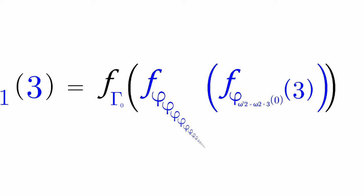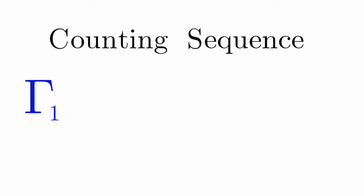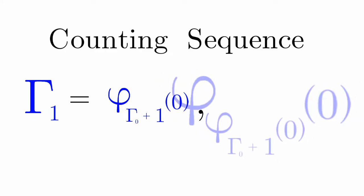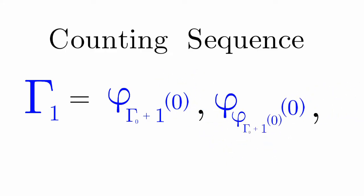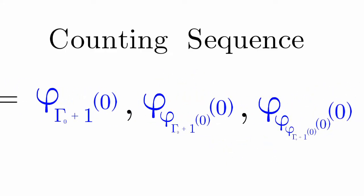We can get bigger with gamma one. The counting sequence for gamma one is equal to phi gamma nought plus one, phi phi gamma nought plus one, phi phi phi gamma nought plus one, and so on.